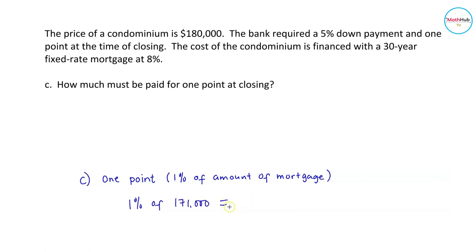This is equal to 0.01. You convert 1% to decimal. So 0.01 times $171,000 means multiplication. This is equal to $1,710. This is the one point at closing.